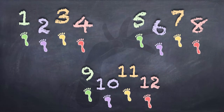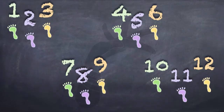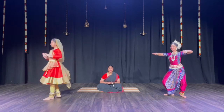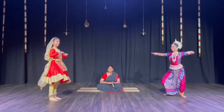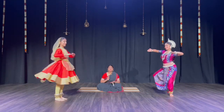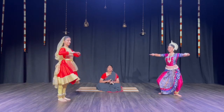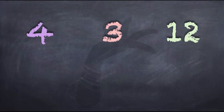Crystal just did three sets of four, and that got her to the number twelve. Three sets of four are twelve, and four sets of three are also twelve. So the number twelve has the factors four and three.